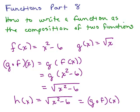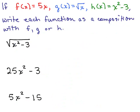Let's try it on something else. We take these three functions: f(x) = 5x, g(x) = √x, and h(x) = x² - 3. We're going to try to write each of the following functions as a composition using either f, g, or h. So how can I write √(x² - 3)? I look at the three functions. The main thing is I have the square root of something. So this looks like √x, but instead of x I have x² - 3.